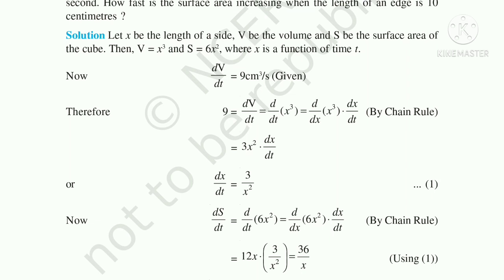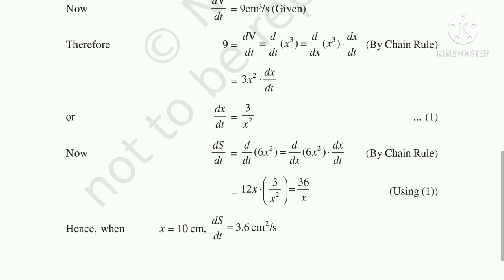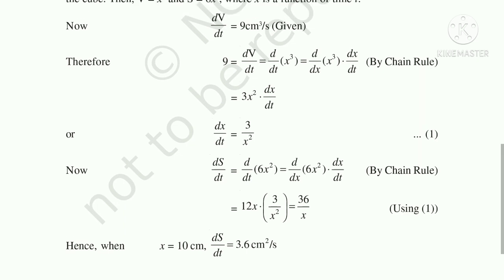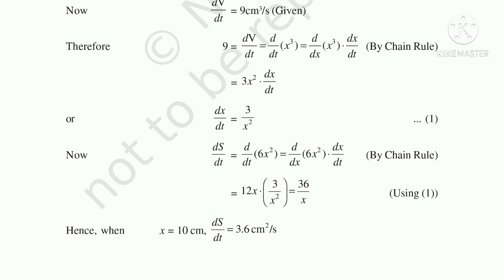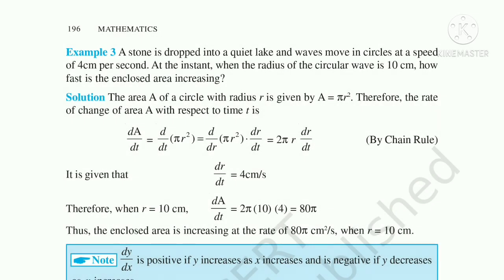Now differentiating the surface area S = 6x² with respect to time: dS/dt = 6 · 2x · dx/dt = 12x · dx/dt. Substituting dx/dt = 3/x² gives dS/dt = 36/x. Since the edge length x = 10 cm, the final answer is dS/dt = 3.6 cm²/s.